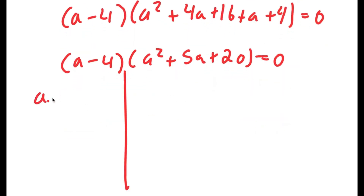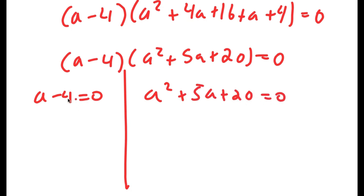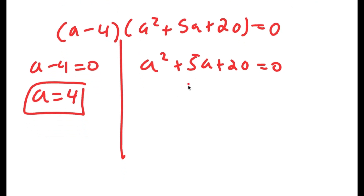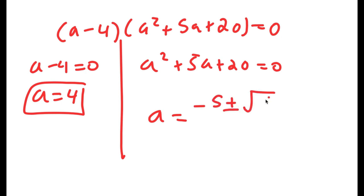This gives me two equations: a minus 4 equals 0, and a squared plus 5a plus 20 equals 0. For a minus 4 equals 0, a is obviously equal to 4. For a squared plus 5a plus 20 equals 0, I'm going to use the quadratic formula, but I'm not going to work through all the steps here.